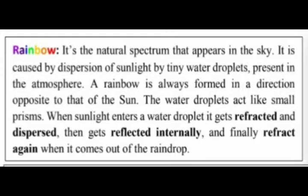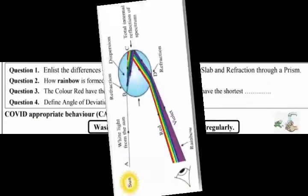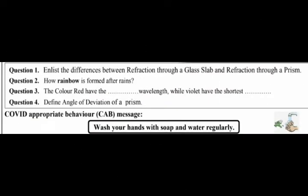Question 2: How is a rainbow formed after rain? A rainbow is the natural spectrum that appears in the sky, caused by dispersion of sunlight by tiny water droplets in the atmosphere. A rainbow is always formed in a direction opposite to that of the sun. The water droplets act like small prisms — sunlight entering a droplet gets refracted and dispersed, then internally reflected, and finally refracts again as it exits the raindrop.